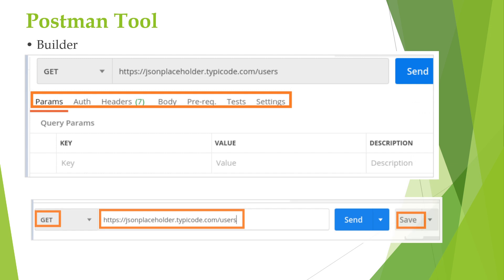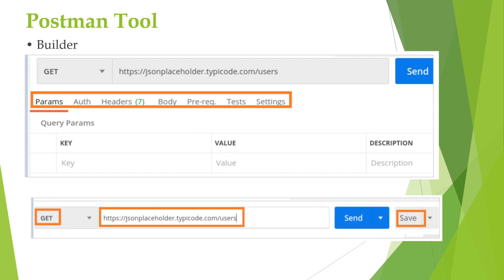The builder section has tabs like Params, Authorization, Header, Body, Prerequisites, Tests, and Settings. The parameters of a request in key-value pairs are mentioned within the Params tab.